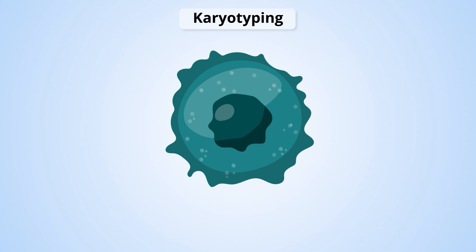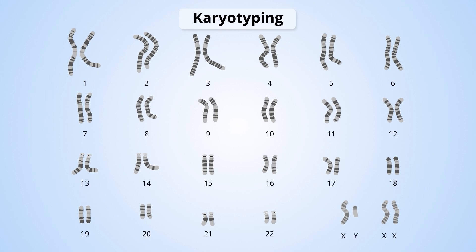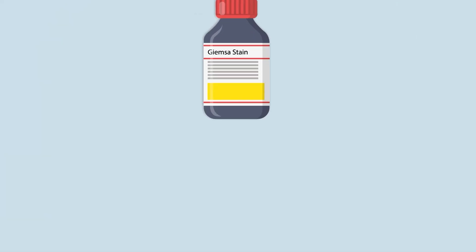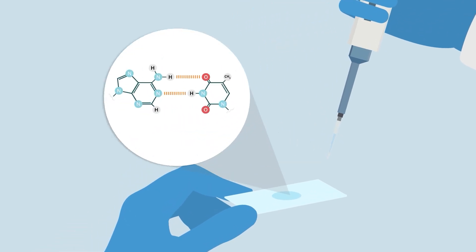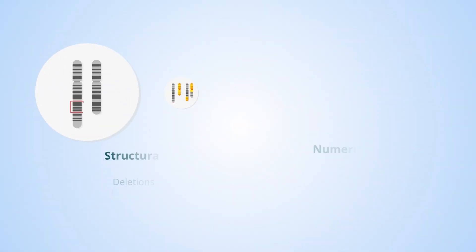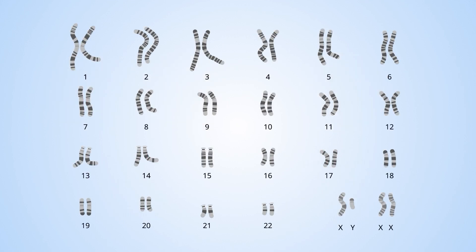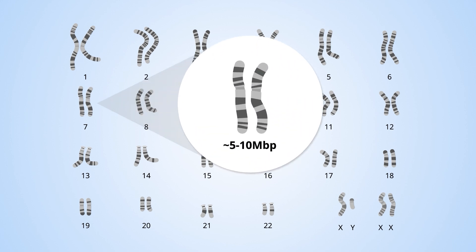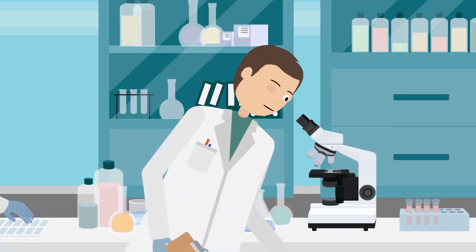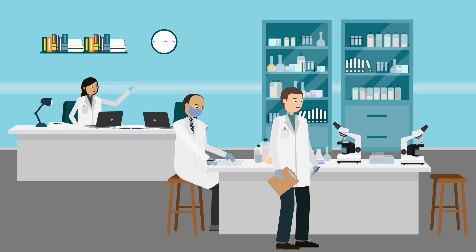Karyotyping is the staining and pairing of chromosomes to determine abnormalities, and was among the first technologies used for molecular profiling. In conventional karyotyping, Giemsa stain is used to highlight areas of adenine-thymine bonding in condensed chromosomes, creating distinctive banding patterns. Its resolution is limited to 5 to 10 megabases, making it unable to detect small rearrangements or single nucleotide polymorphisms, and it has mostly been supplanted by newer technologies.